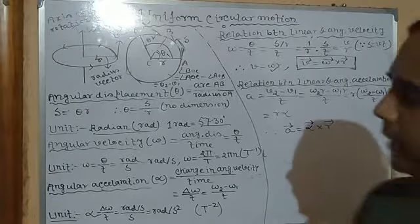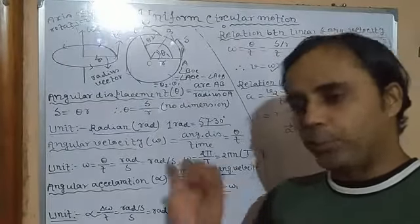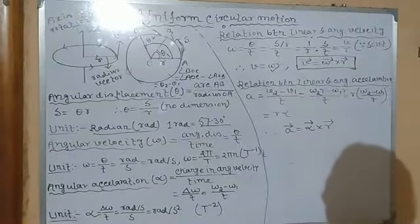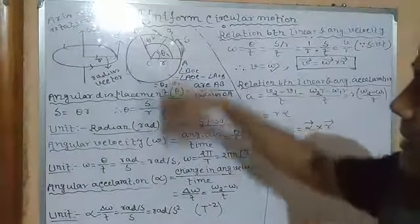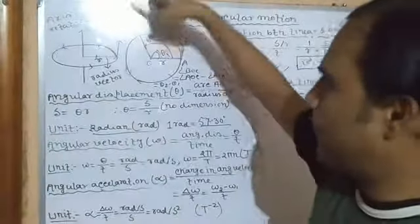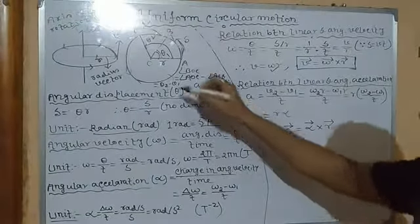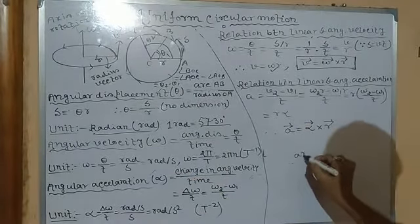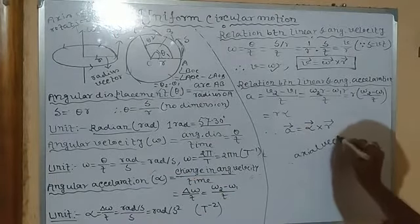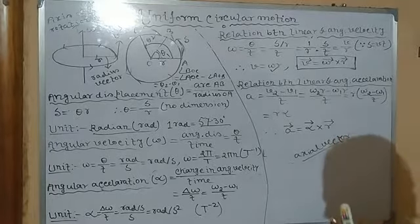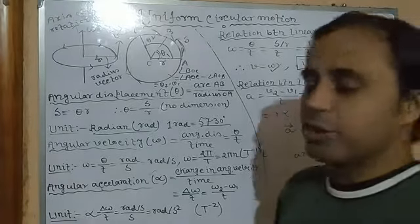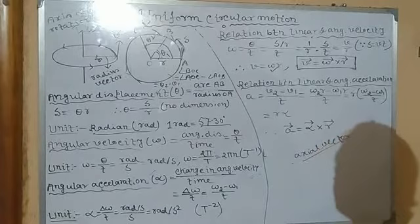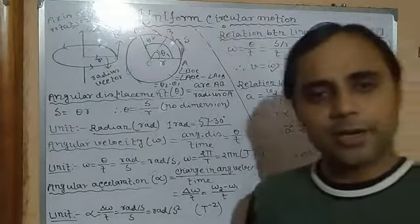Linear displacement, linear velocity, and linear acceleration are all called polar vectors, since their initial point is called the polar axis. On the other hand, angular displacement, angular velocity, and angular acceleration are all called axial vectors, since their direction is along the axis of rotation. These are the fundamental elementary ideas regarding uniform circular motion. See you in the next video.